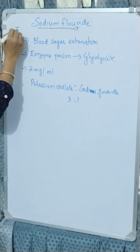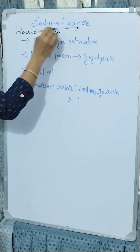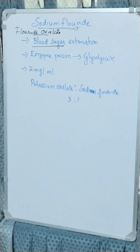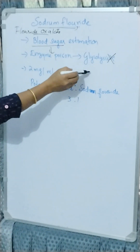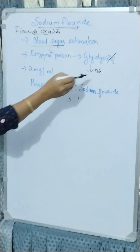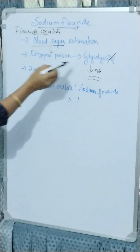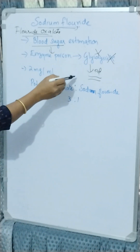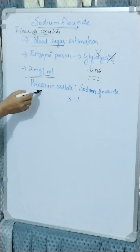Sodium fluoride, also known as fluoride oxalate, is used for blood sugar estimation. It acts as an enzyme poison, preventing glycolysis, which would otherwise reduce the sugar content of the sample. The concentration used is 2 milligrams per ml, and the potassium oxalate to sodium fluoride ratio is 3:1.